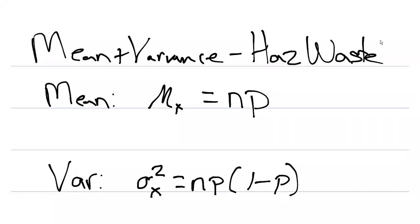This video will talk about the mean and the variance for the hazardous waste example. Remember, this is a binomial distribution, and so for the mean and the variance, all we need to know are what n and p are.